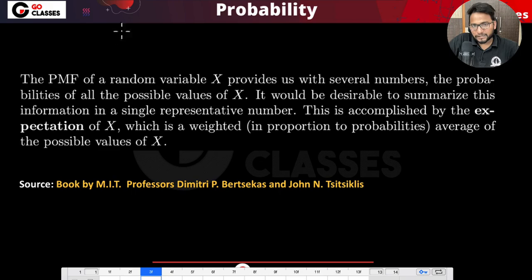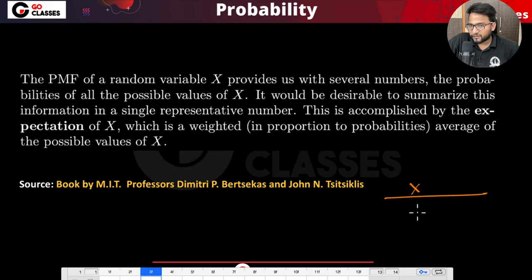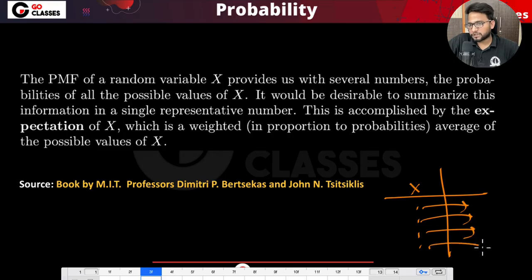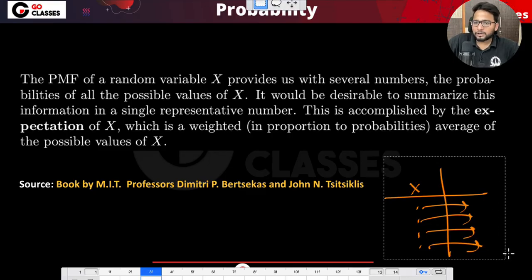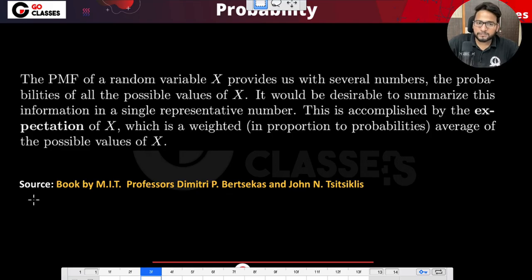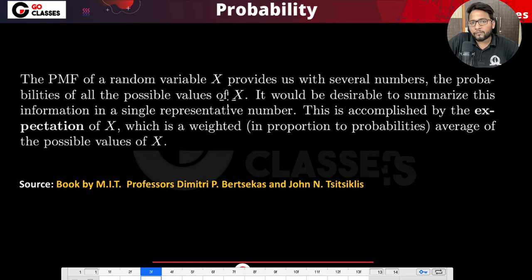The PMF of random variable x provides us several numbers. If x takes a thousand different values, the PMF will tell you the probability of each value. So basically PMF provides many numbers — all the probabilities of all values of x — and it would be desirable to summarize all this information in a single representative number.